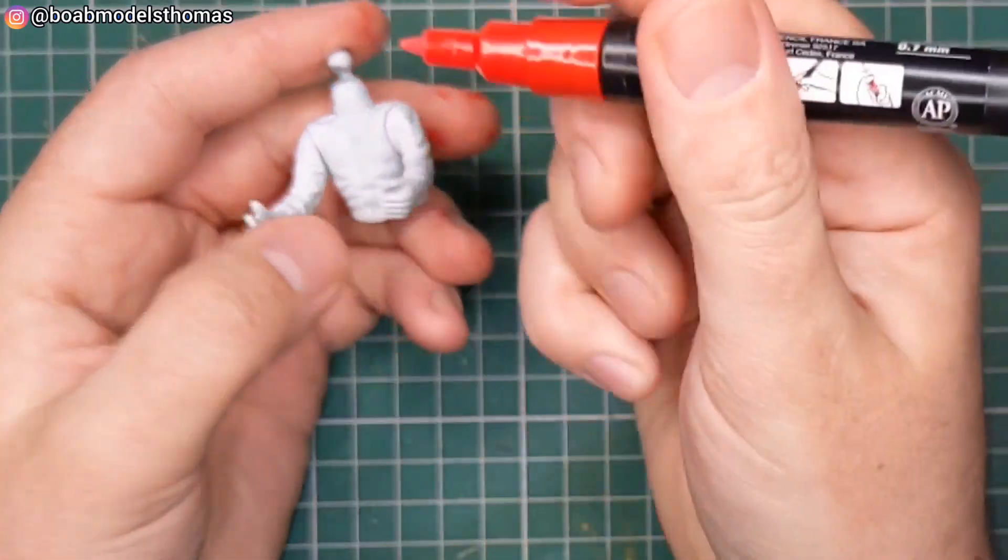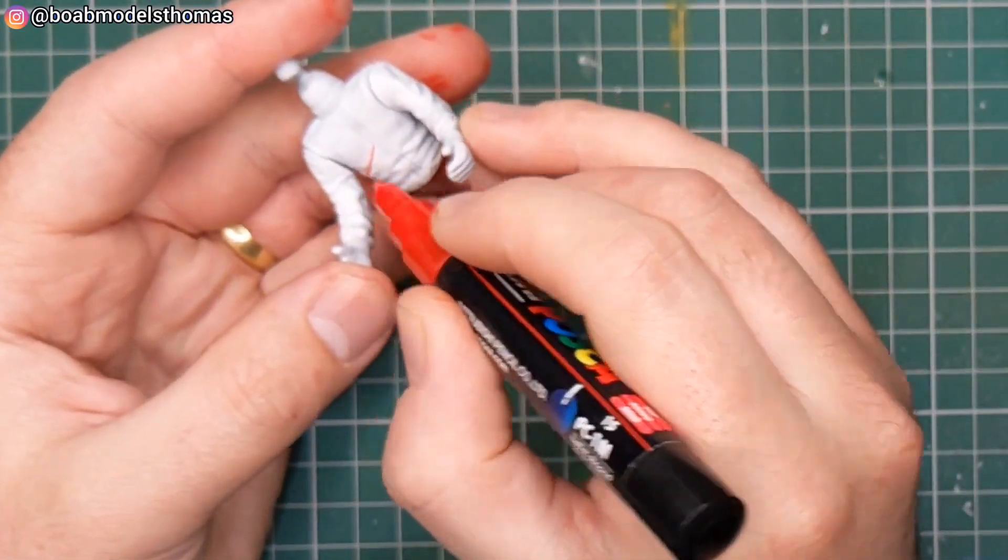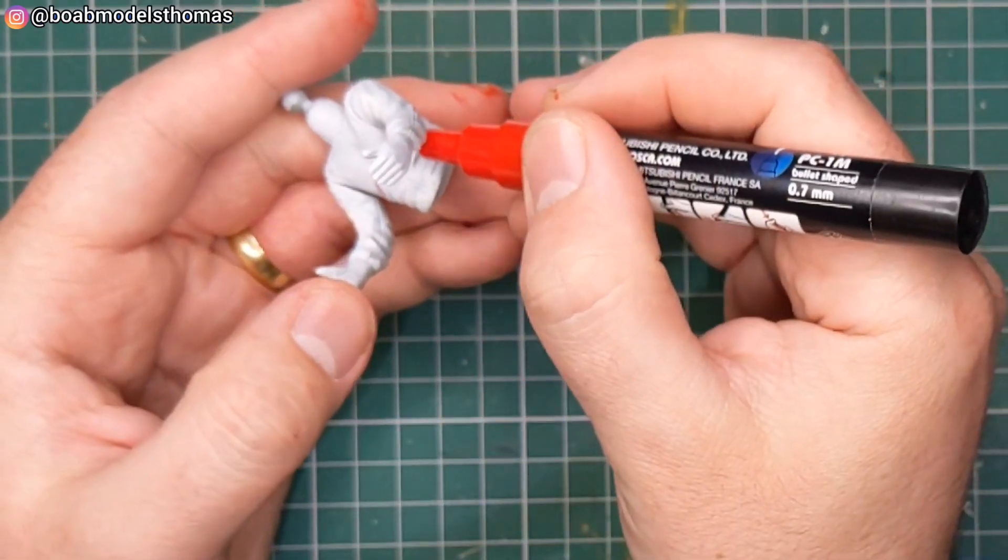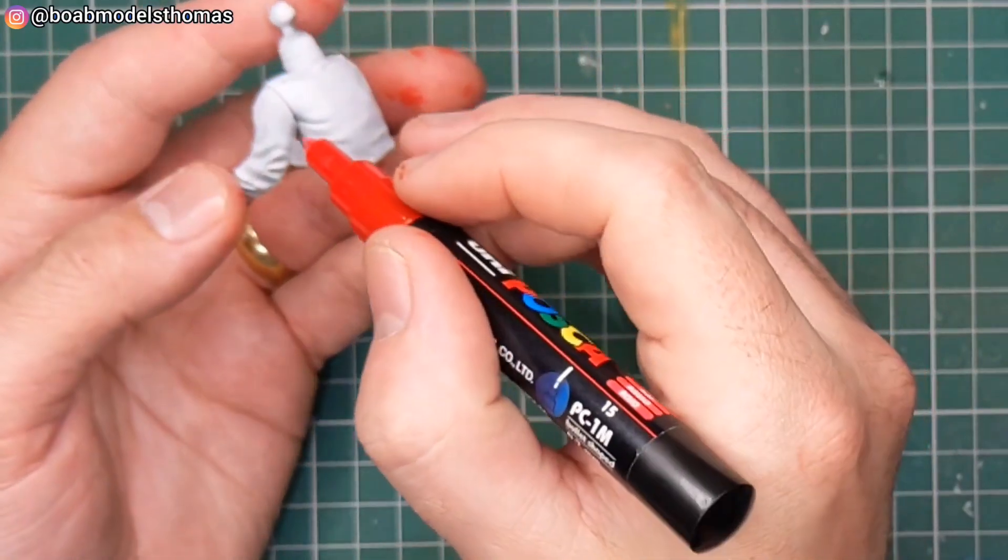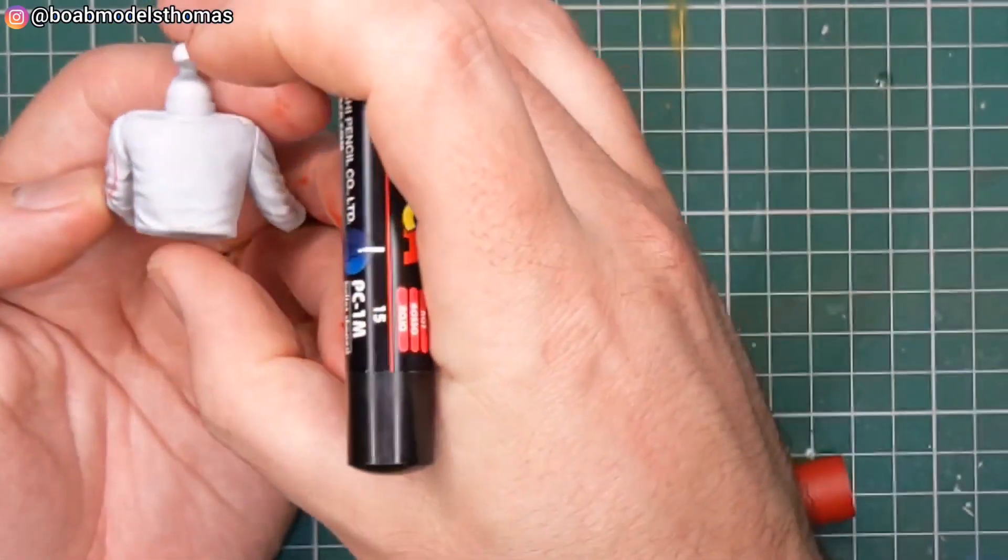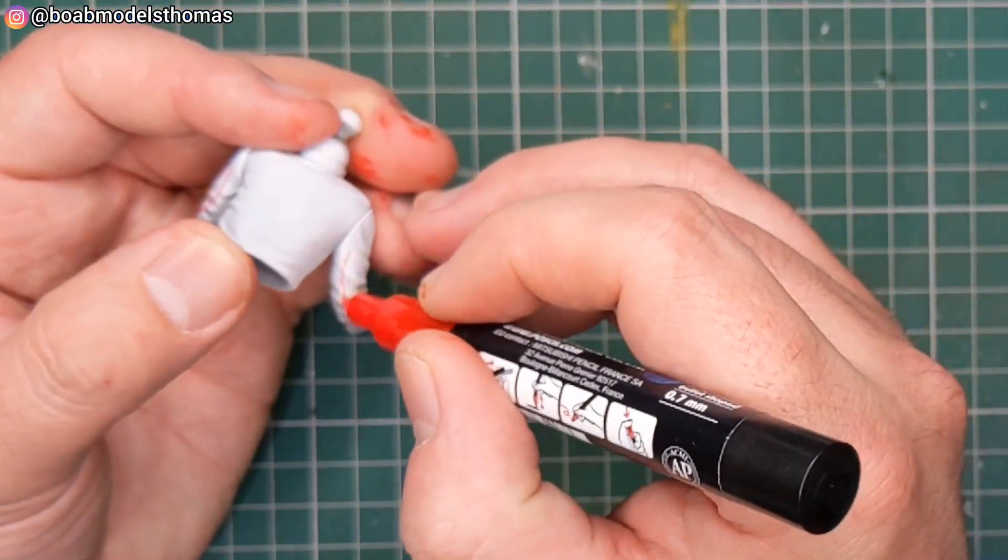I then primed them in some white primer from Halfords and then used this red Posca paint pen to do the outline of the white sections. So those are the parts that I'm going to leave unpainted. Some parts on the arms and that kind of Marlboro chevron shape on the stomach area.